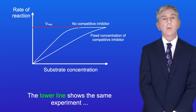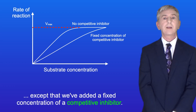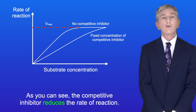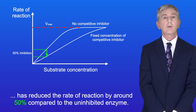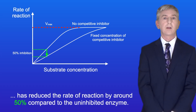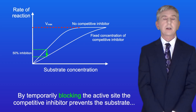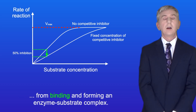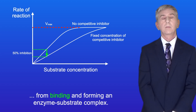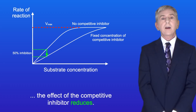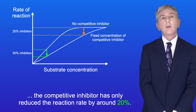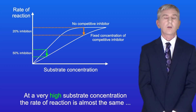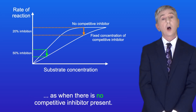The lower line shows this same experiment except that we've added a fixed concentration of a competitive inhibitor. As you can see, the competitive inhibitor reduces the rate of reaction. At the point shown by the green arrow, the competitive inhibitor has reduced the rate of reaction by around 50% compared to the uninhibited enzyme. By temporarily blocking the active site, the competitive inhibitor prevents the substrate from binding and forming an enzyme-substrate complex. However, as we increase the substrate concentration, the effect of the competitive inhibitor reduces. At the higher substrate concentration shown by the orange arrow, the competitive inhibitor has only reduced the reaction rate by around 20%. And at a very high substrate concentration, the rate of reaction is almost the same as when there's no competitive inhibitor present.